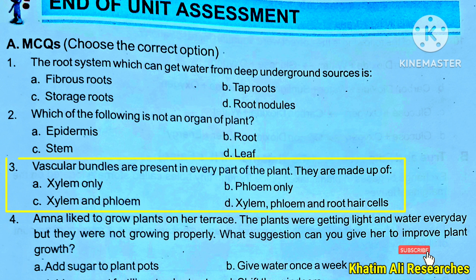Question 3: Vascular bundles are present in every part of the plant. They are made up of — Options: A. Xylem only, B. Phloem only, C. Xylem and Phloem, D. Xylem, Phloem and Root Hair Cells.